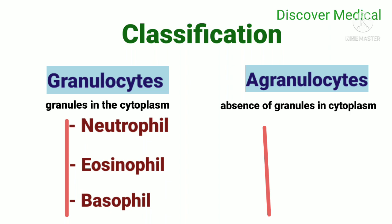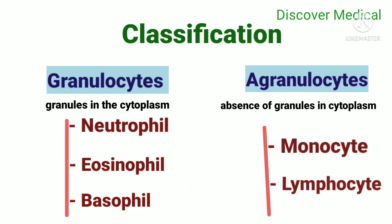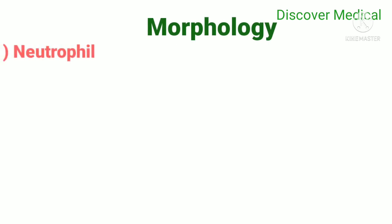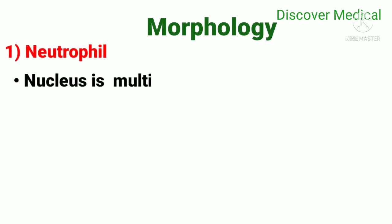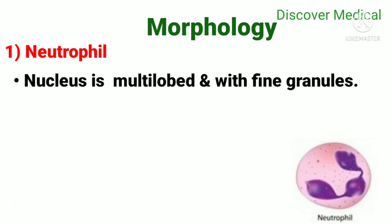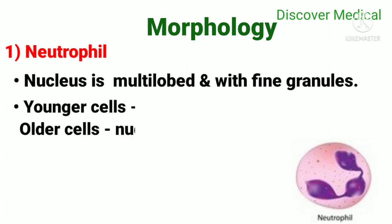Agranulocytes, which means absence of granules in the cytoplasm, include monocytes and lymphocytes. Regarding neutrophil morphology: the nucleus is multi-lobed with fine granules. In younger cells the nucleus is not lobed, while in older cells the nucleus has two to five lobes.